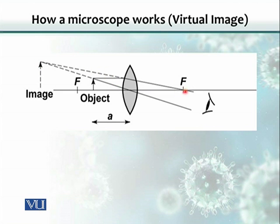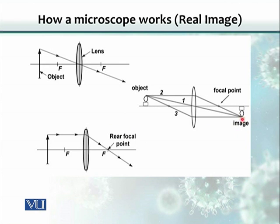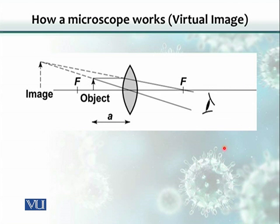An image formed by converging rays is a real image — it can be projected onto a screen or curtain. A virtual image, formed by tracing back diverging rays, cannot be projected onto a screen.